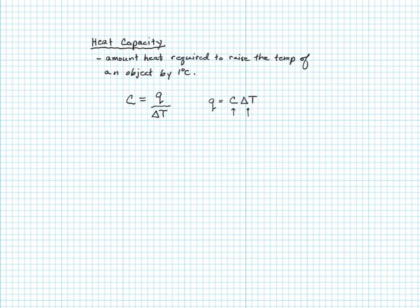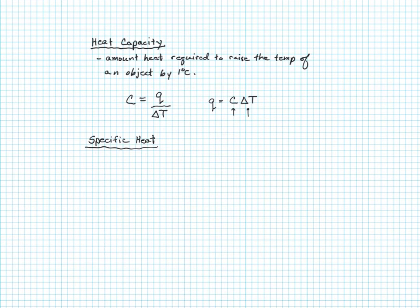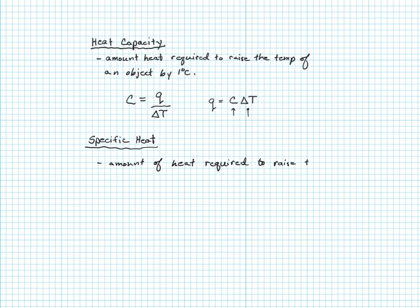Related to heat capacity is specific heat. Whereas heat capacity was a measure of the amount of heat required to raise an entire object by one degree Celsius, specific heat is based upon different types of substances. The specific heat is the amount of heat required to raise the temperature of one gram of a substance by one degree Celsius.